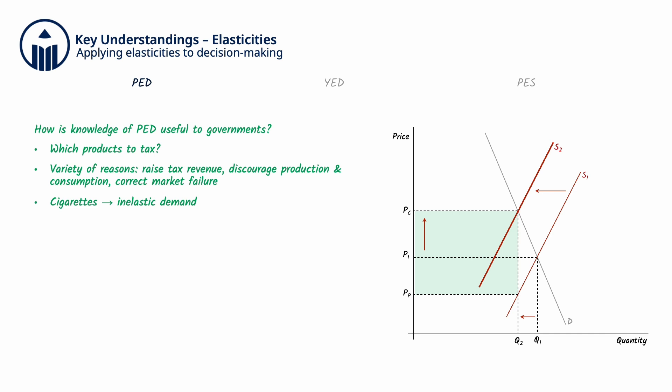An indirect tax on cigarettes will raise the costs of production for tobacco companies, and so shift the supply curve leftward from S1 to S2, thus raising the price paid by consumers from P1 to Pp.